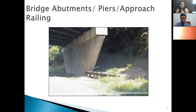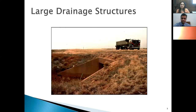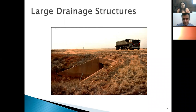Also at bridge piers — the approach to a bridge — these objects are very stiff and also cause severe accidents to vehicles. These are some of the places where we need a guardrail system in order to regulate vehicle safety.